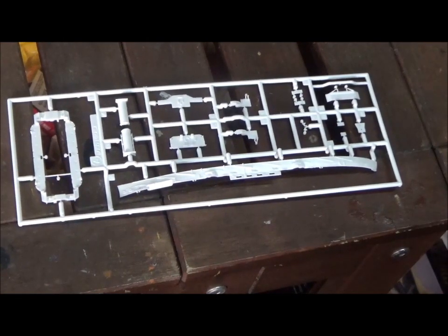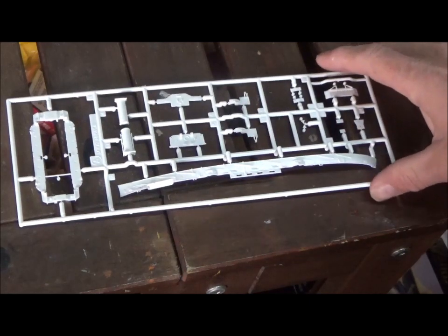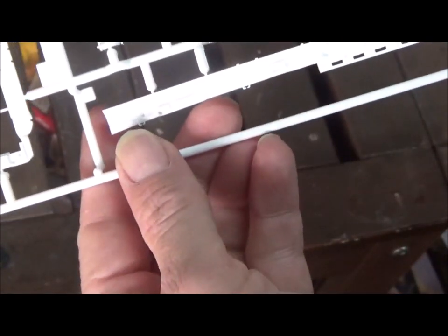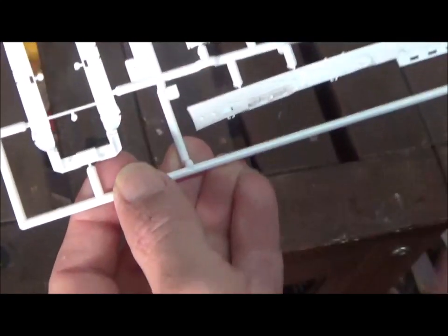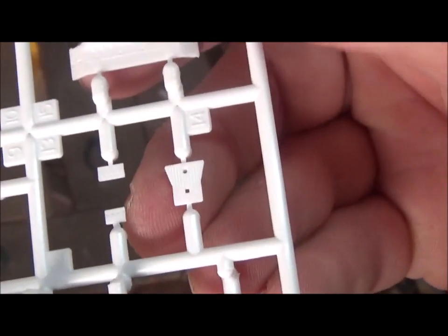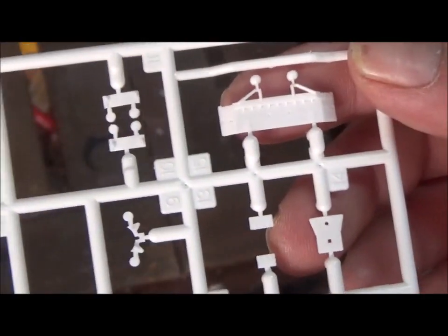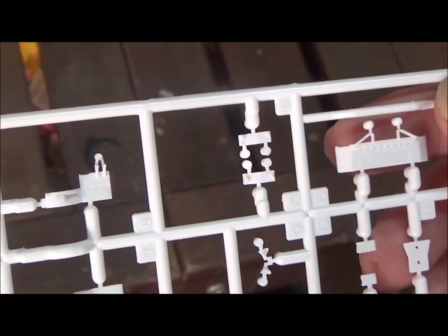So we'll start here with tree A or sprue A. You can see we have some stacks here. We have one of the hull sides here and this piece that goes on the deck. You can see there's quite a bit of good detail here on this hull side. The parts look good. They're crisp and clean.